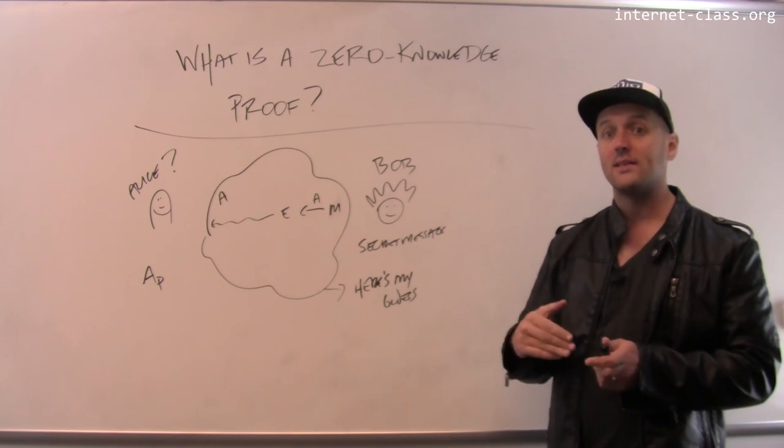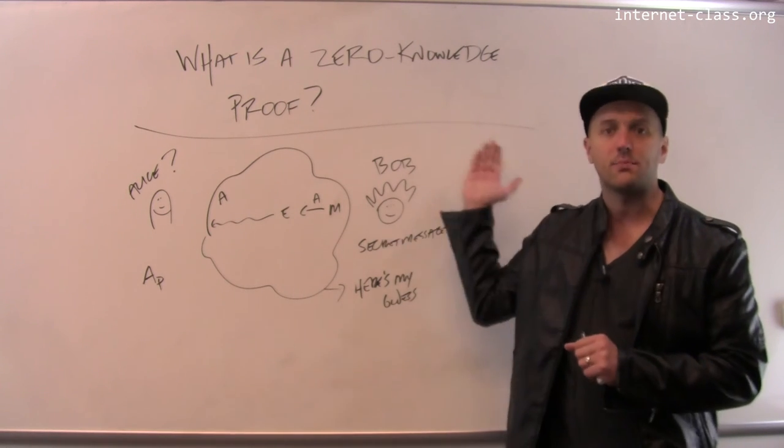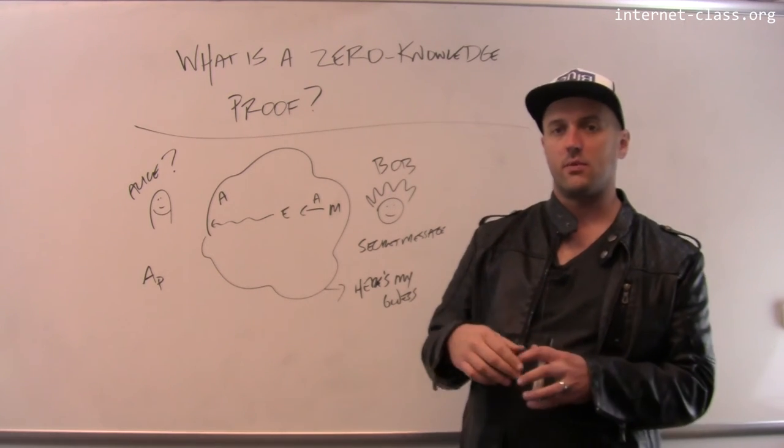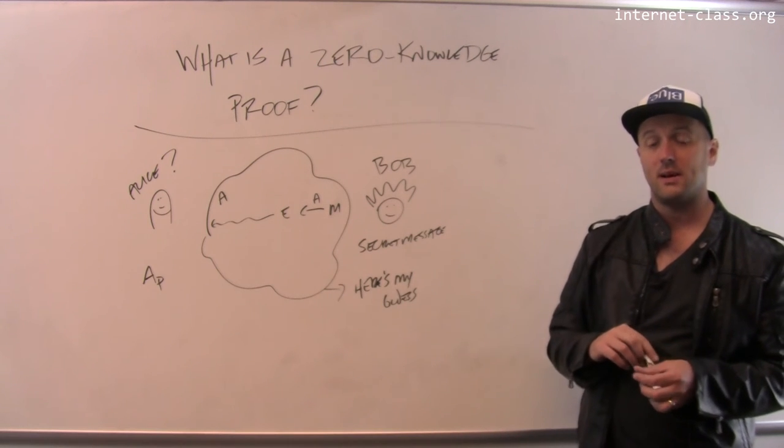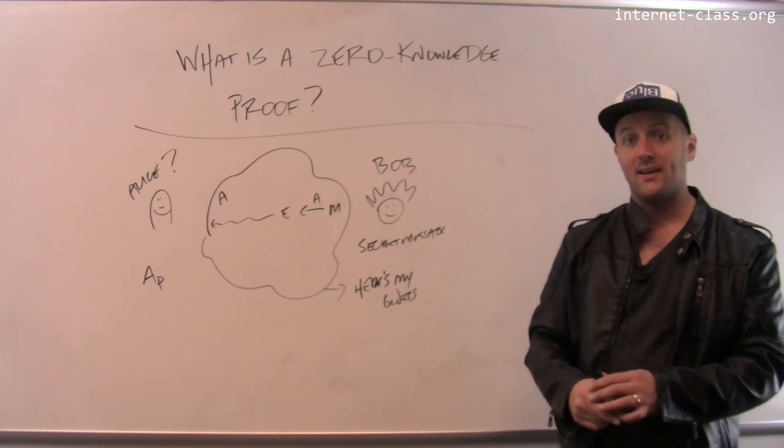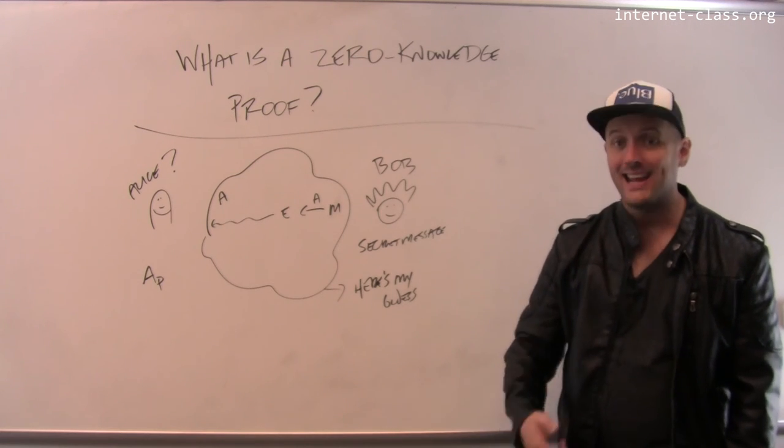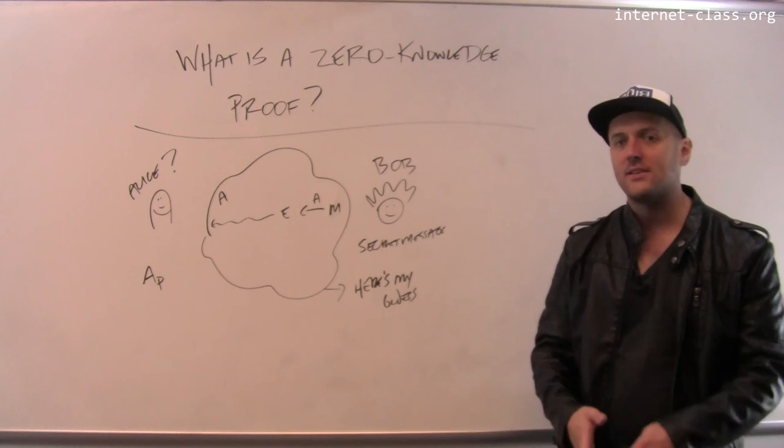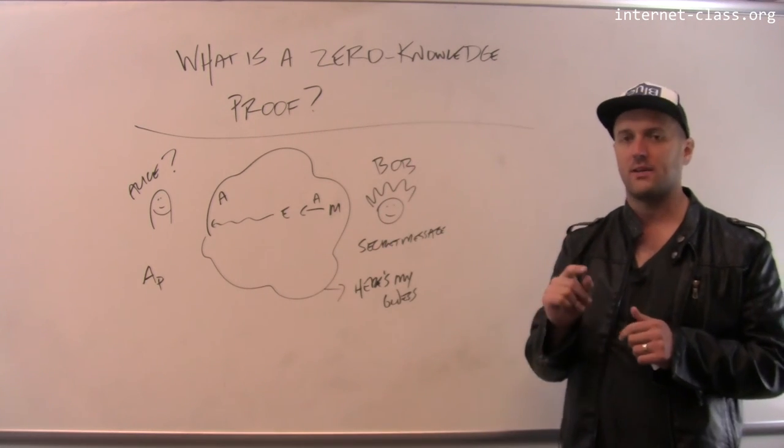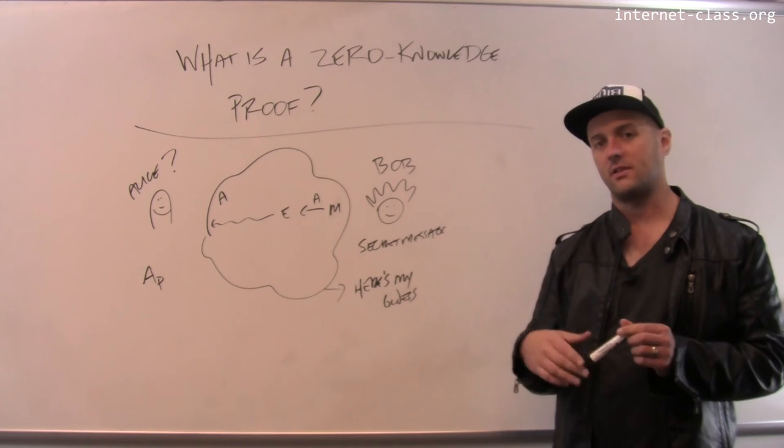But if Bob wants even more proof that Alice is the actual Alice and not some imposter, he could just repeat the process. So he could send, let's say that for some reason Bob is limited to sending messages that are one character. Or let's say that Bob is limited to sending messages that are the numbers between one and ten. So the imposter Alice guesses, she has a ten percent chance of guessing correctly. But if I make her guess again and again and again and again, eventually the actual Alice is going to get all the questions right and the imposter Alice is going to start to miss a lot of them. So the probability that the imposter Alice can answer all the queries properly starts to drop.